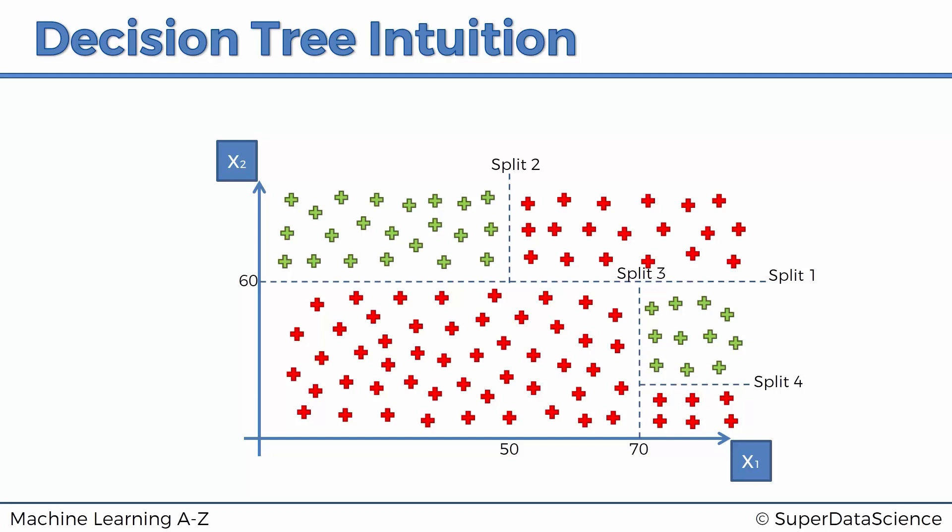So that is how a decision tree works and the basis for these splits. How are these splits selected? How does the algorithm know where to select the splits? The split is done in such a way to maximize the number of a certain category in each of these splits. It's a very basic way to explain it. In reality, there's some complex mathematics happening in background.